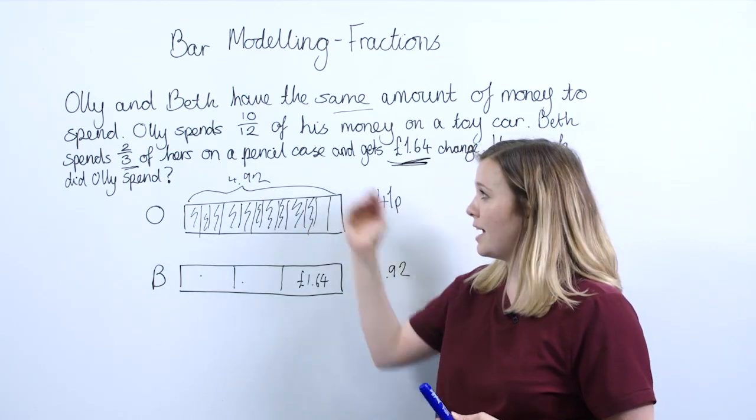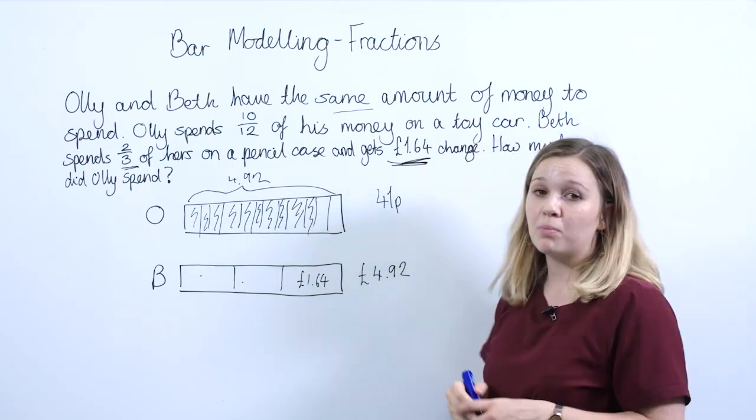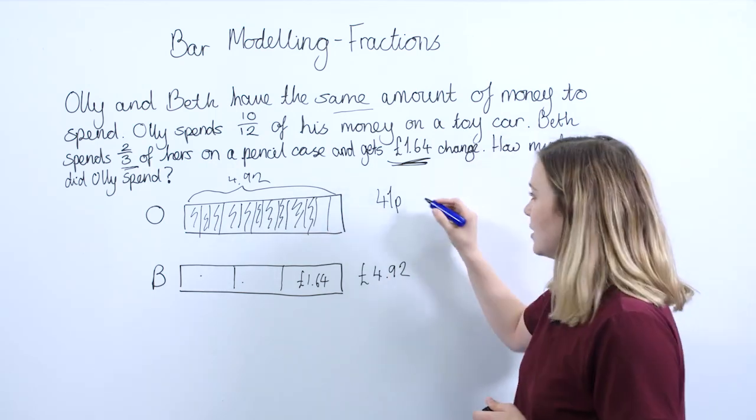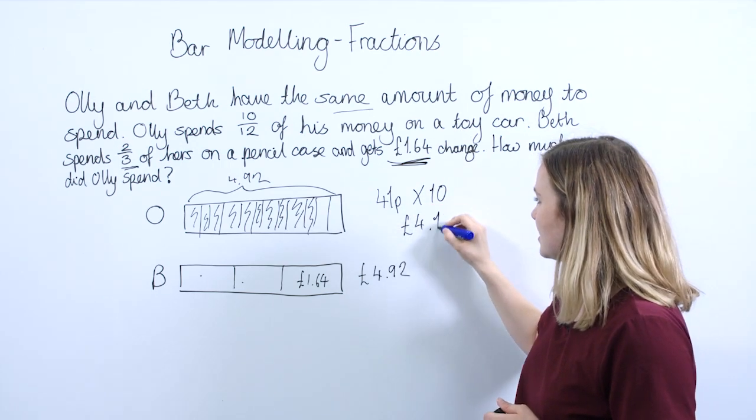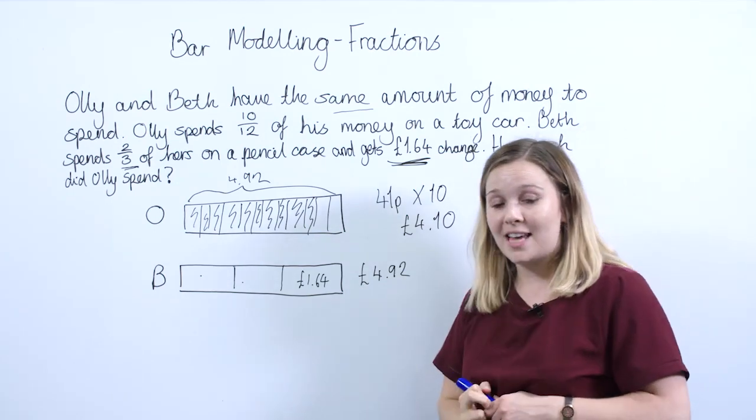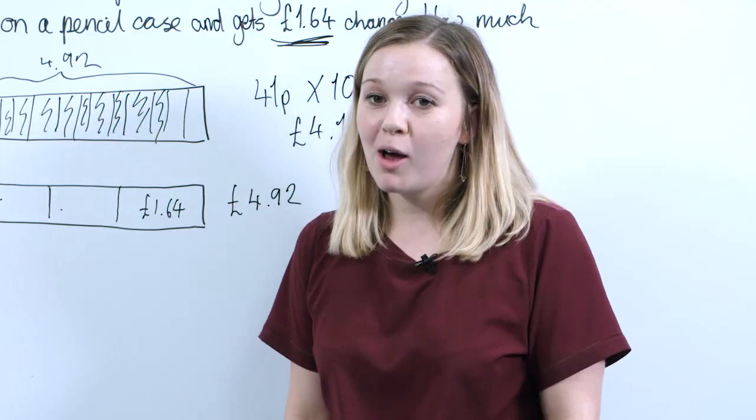So then you need to ask them, how do we find out how much he spent all together if it's 10/12? They simply need to multiply the 41p by 10. So timesing that by 10 would give them £4.10. So overall we can say that Ollie spent £4.10.